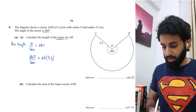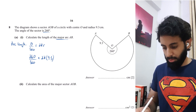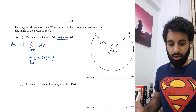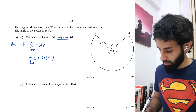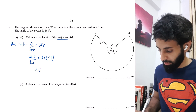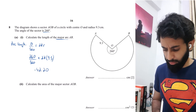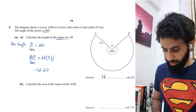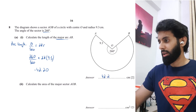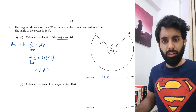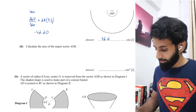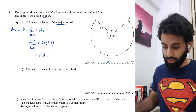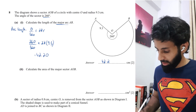Working this out: 260 ÷ 360 × 2π × 9.3 gives 42.20, which rounded to three significant figures is 42.2. That is the correct answer for the major arc length.